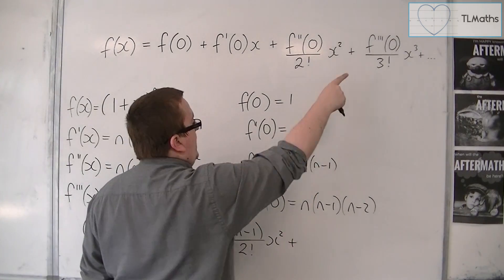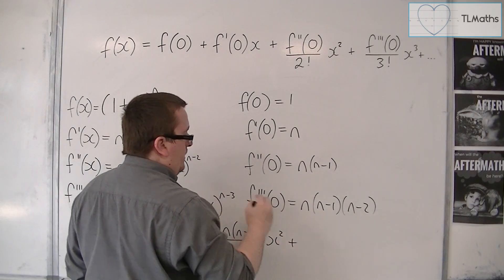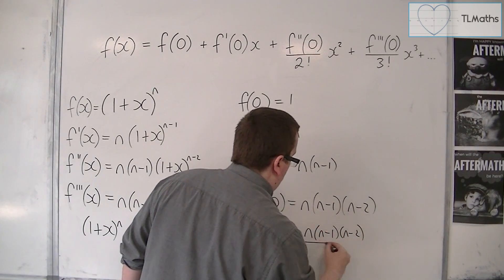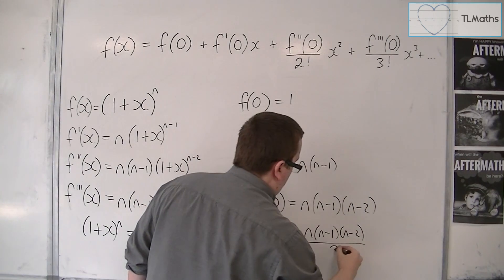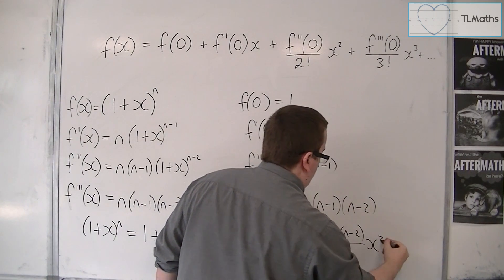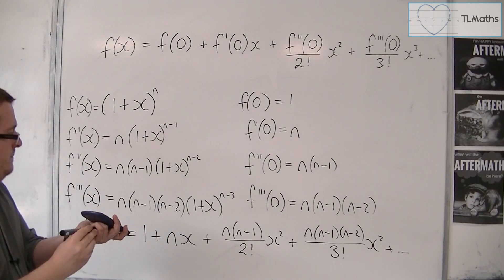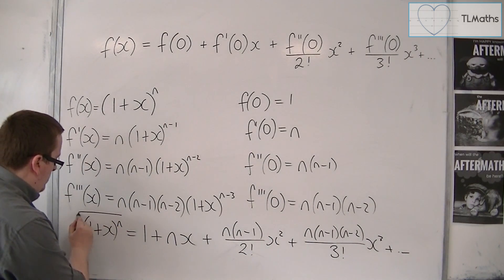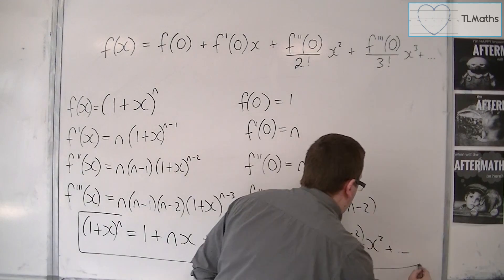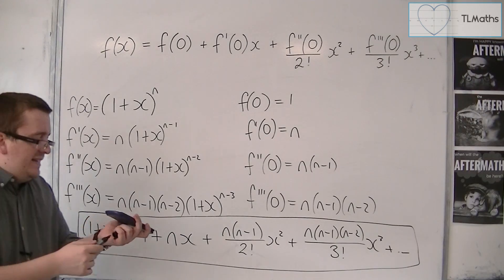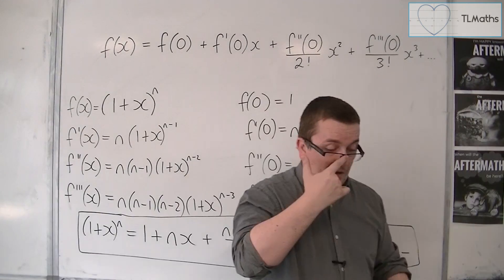Next term, f triple prime 0, so n, n minus 1, n minus 2 over 3 factorial x cubed. And so it will go on. So this is our expansion of 1 plus x to the n.